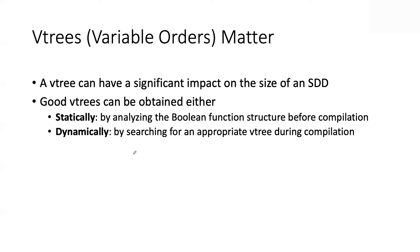There are static methods and dynamic methods for finding good variable orders. A static method takes the boolean formula, does some analysis on it represented as a graph, and comes up with a variable order before compilation begins. One static method for OBDDs is called MINCE, based on the notion of cuts and how clauses cross. The dynamic approach starts with a good static order, begins doing apply operations, and if the OBDD starts getting too large, stops and tries to change the variable order to minimize size, then keeps going.